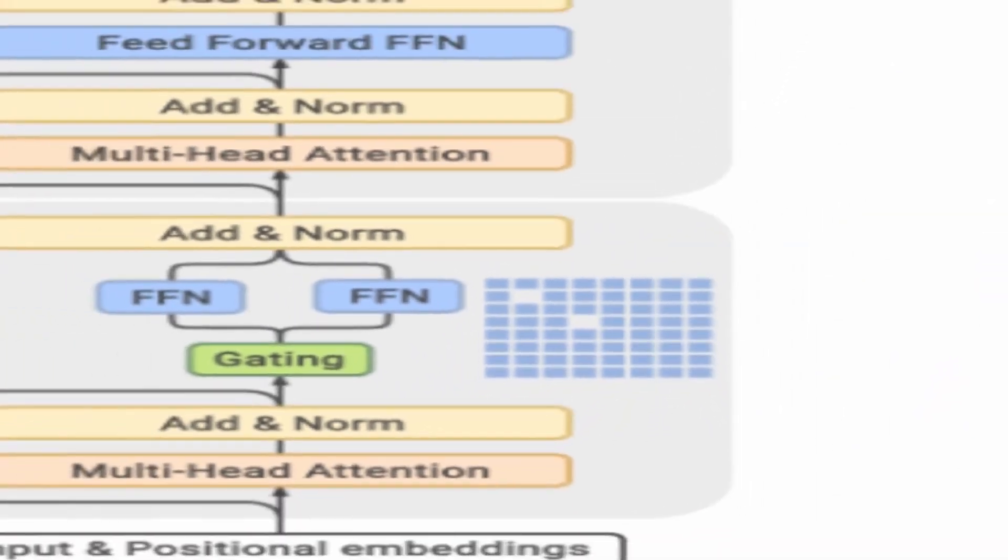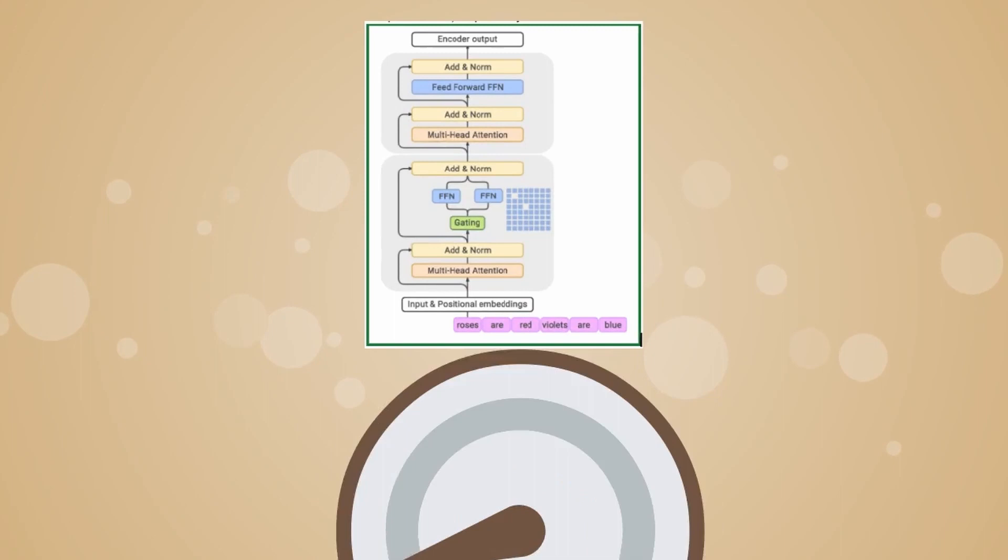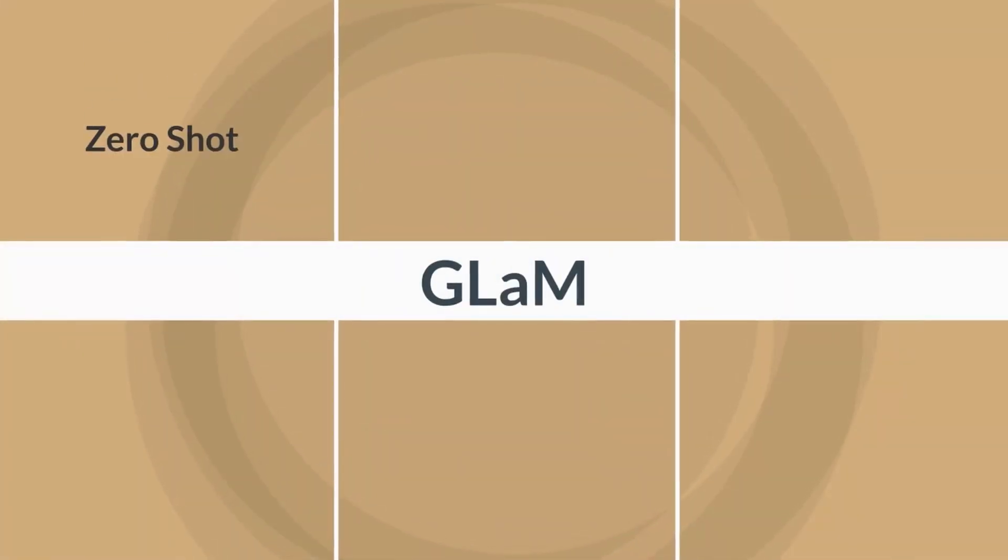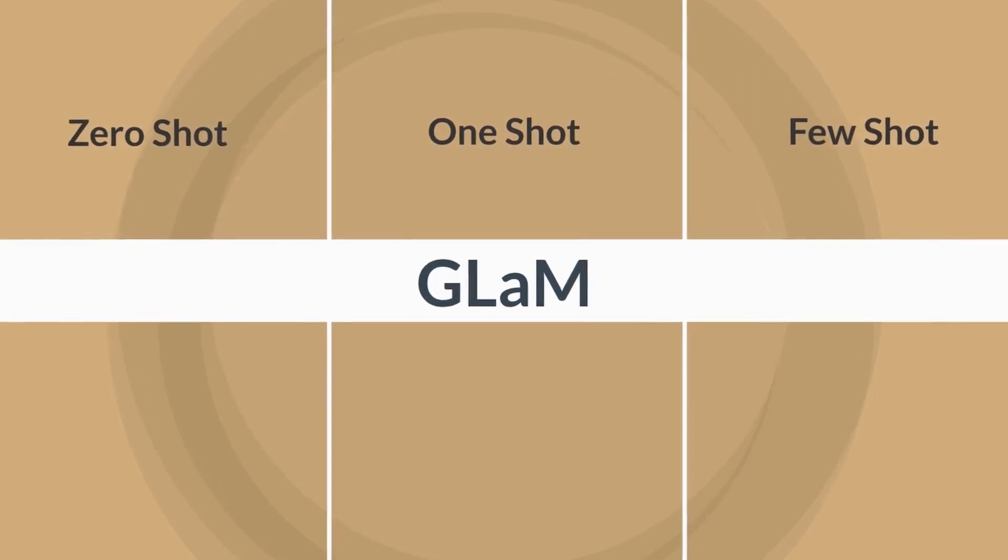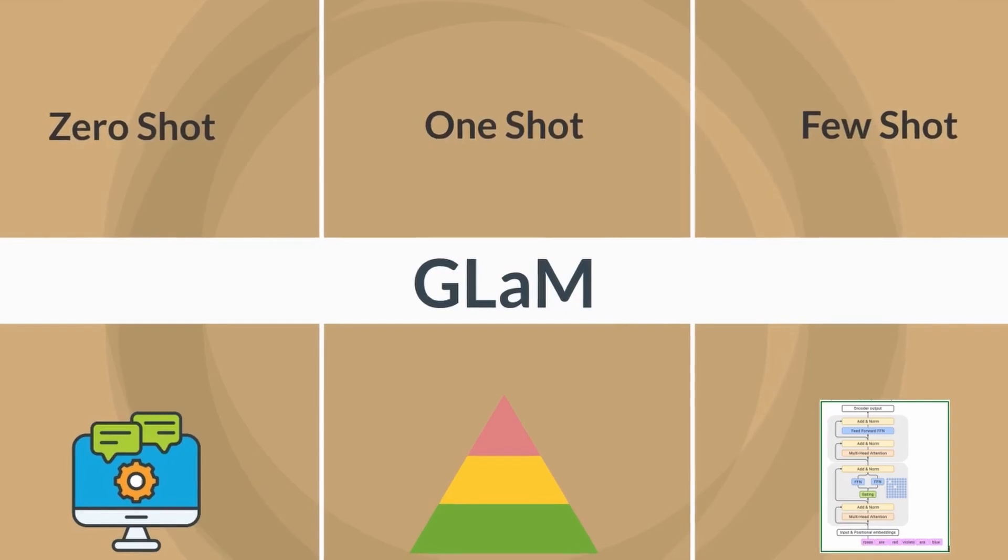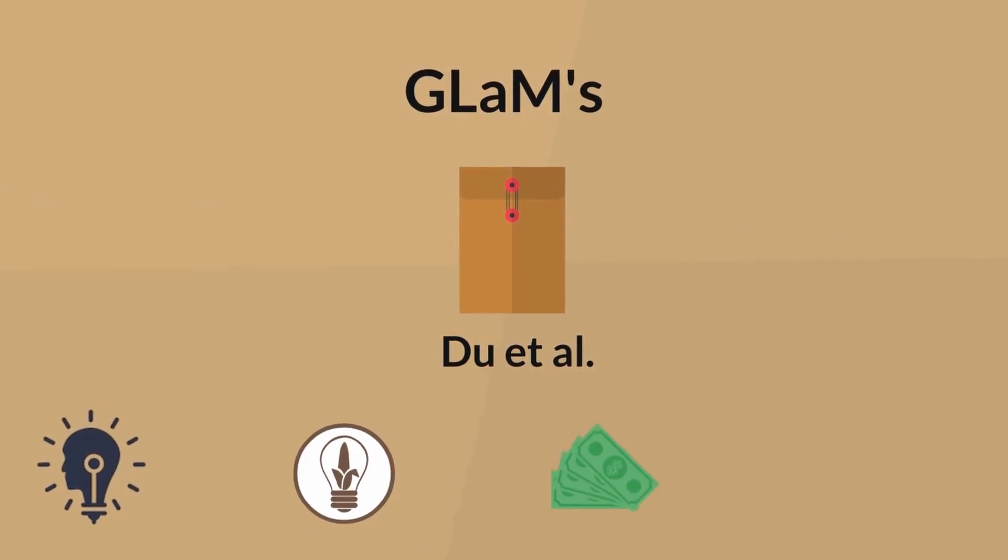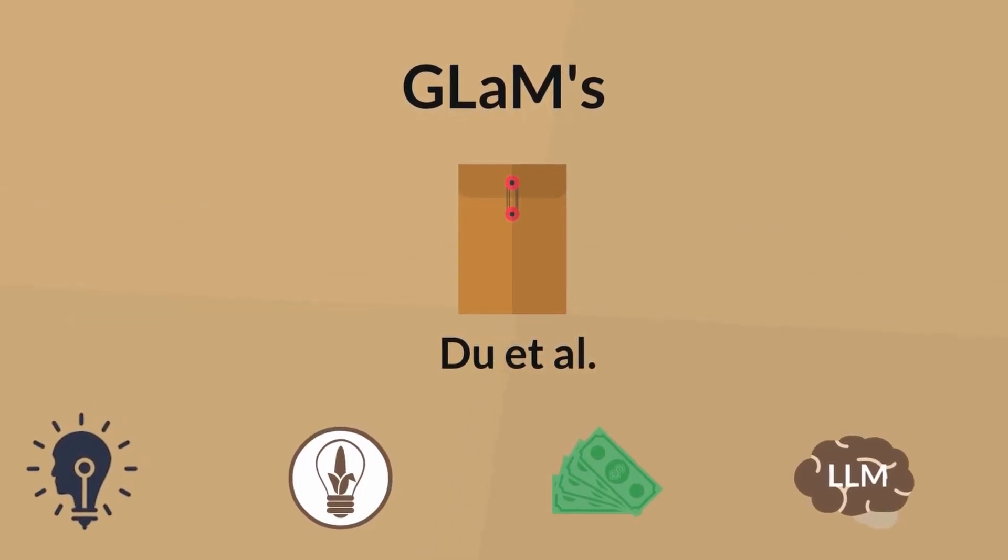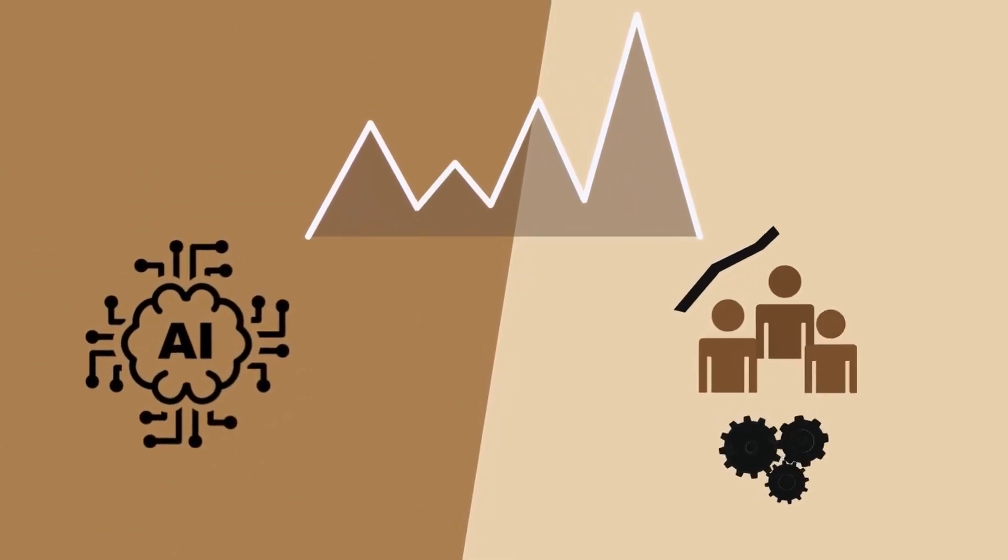In essence, each MOE layer comprises multiple subnetworks, or experts, each specializing in different fragments of the data. The gating layer then determines which experts' output to prioritize based on the context of the input. Such an architecture not only enables greater parameter efficiency, but also allows GLAM to excel in zero-shot, one-shot, and few-shot learning scenarios across diverse NLP tasks, demonstrating a level of generalization that was previously unattainable with denser models. GLAM's advancements have been well-documented in the studies by Du et al., showcasing its potential to pave the way for more environmentally sustainable and cost-effective training of powerful LLMs, furthering the progression of AI language understanding and generation capabilities.